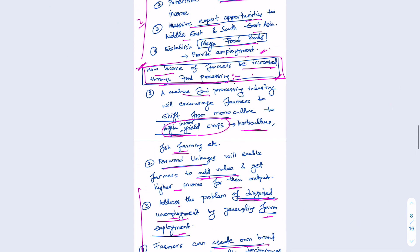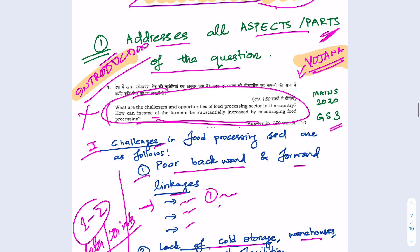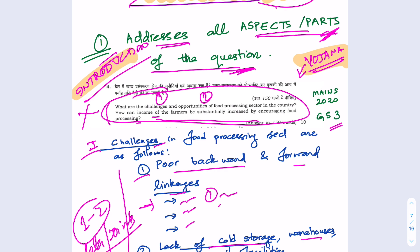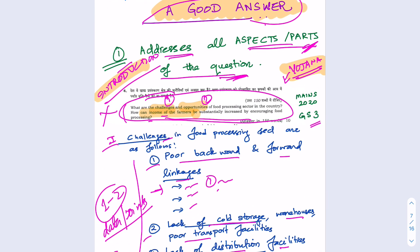To summarize, the main point of today's masterclass is that your answer should address all the aspects of the question. Here we covered three aspects: challenges, opportunities, and how income can be improved through food processing. In the next video we will go deeply into different factors. Look at old papers and test series papers and try to see if you can address all the different aspects of a question — that will really help you out. Take care.